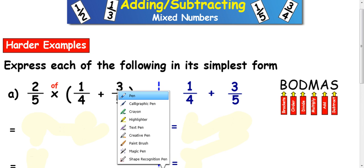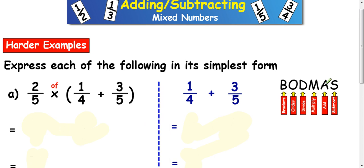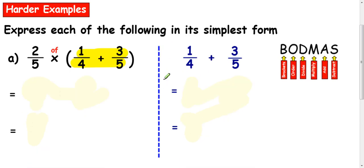Now, first thing to do here is to write down BODMAS and understand the order of operations here. Now you do brackets before anything else. So the first thing I want to do here is I want to do this quarter plus 3 fifths. And I'm going to do that at the side here. Draw a line down and do a quarter plus 3 fifths.